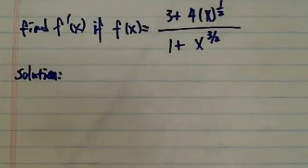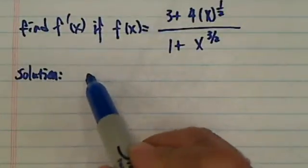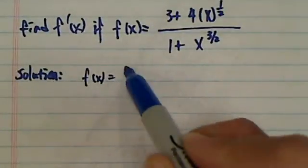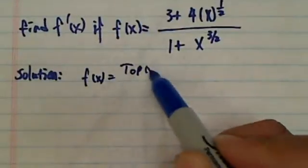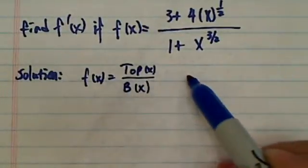Okay, this problem is not hard but it's really messy. So what you need to know is if f of x has a top function of x and a bottom function of x, then...